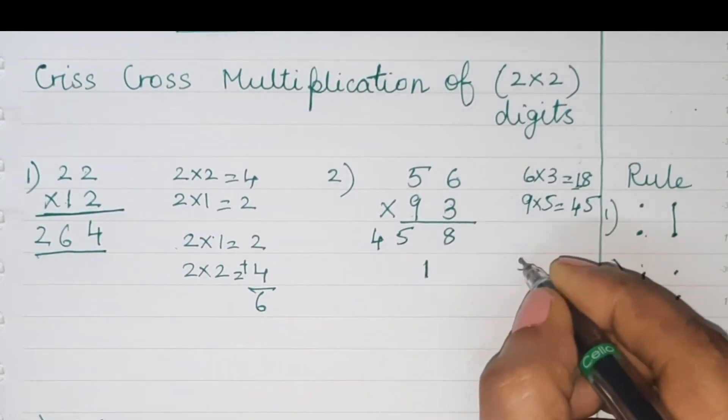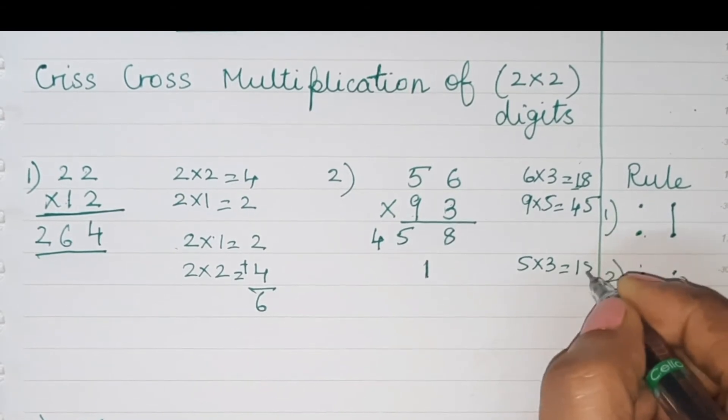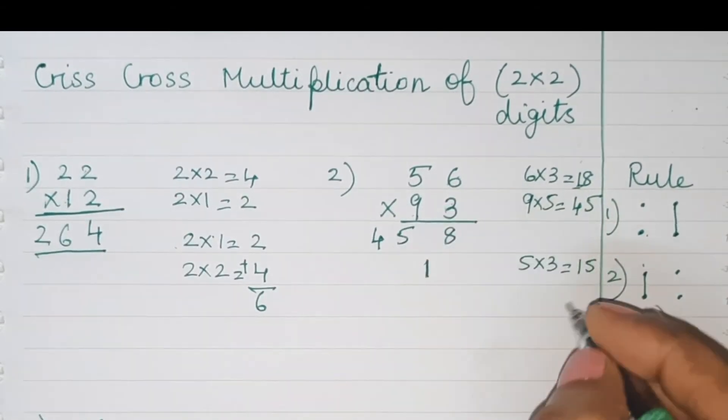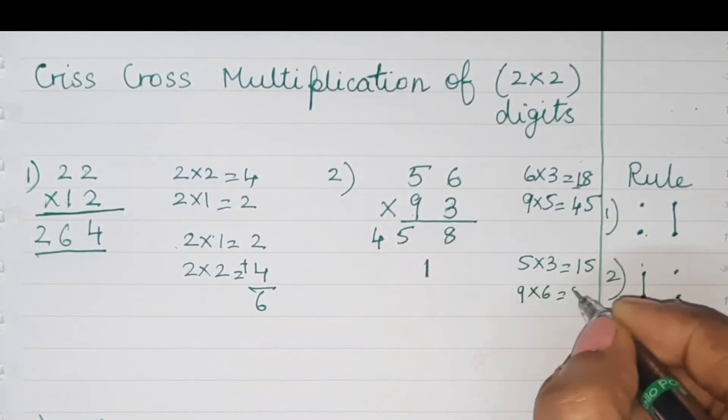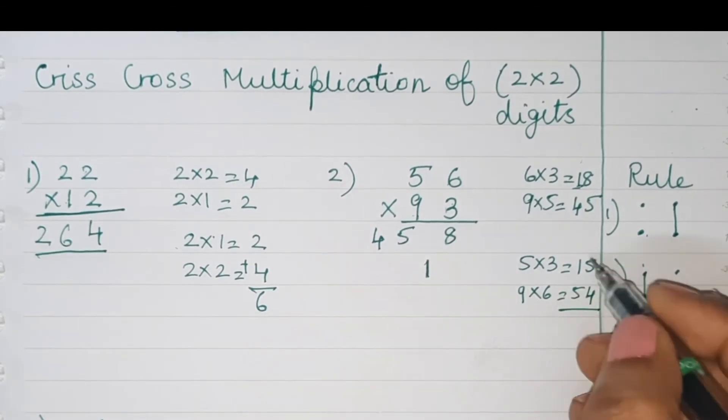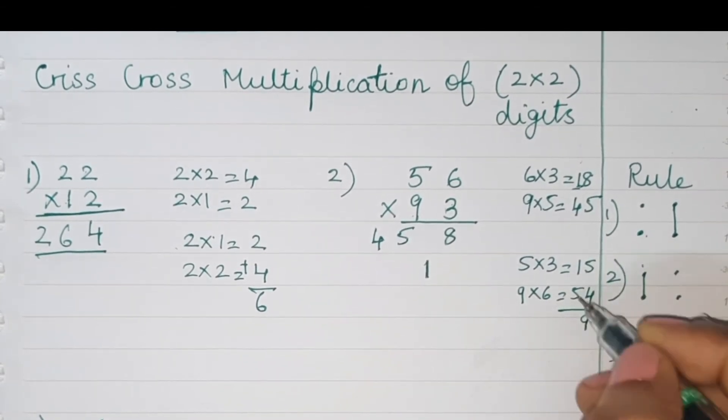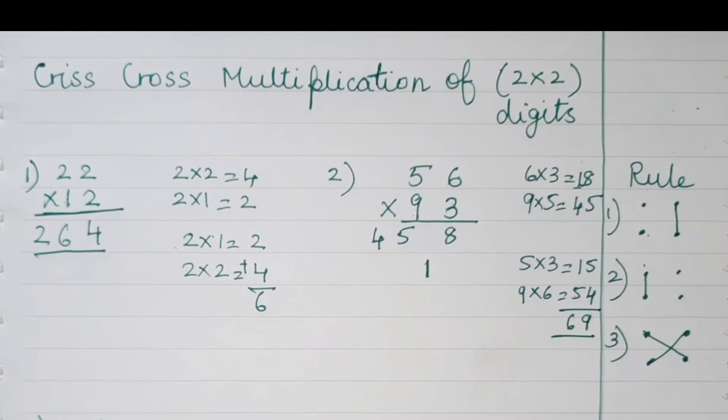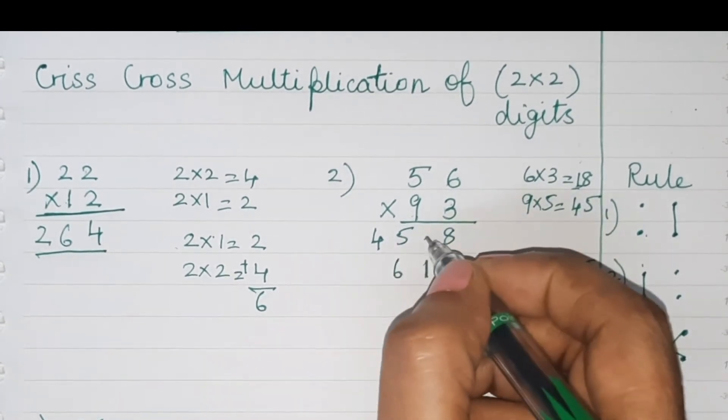Five into six is 30. Nine into six is 54. We get 69 by adding 15 to 54. Write 69 as shown.